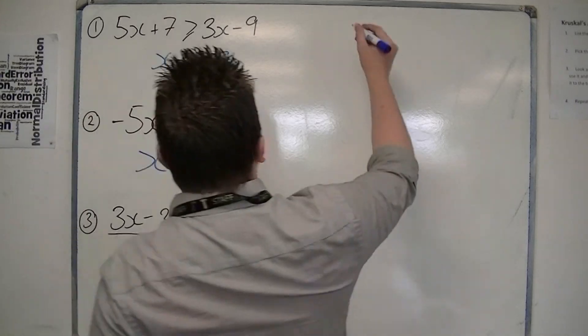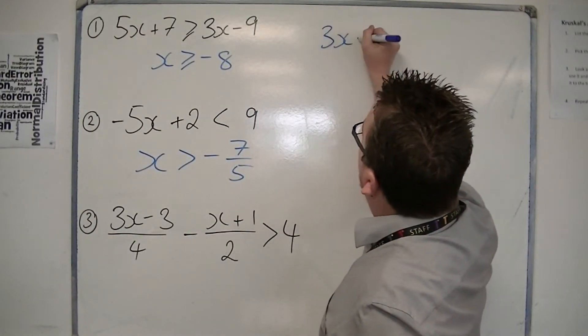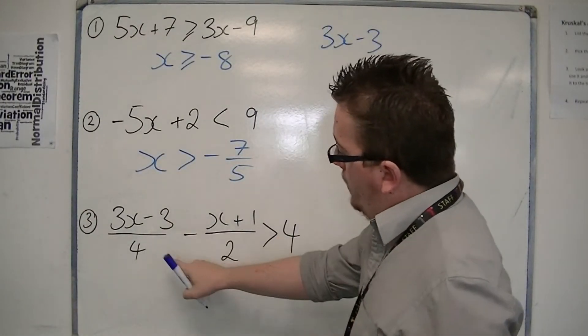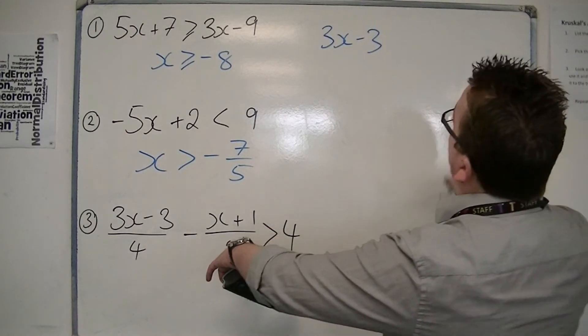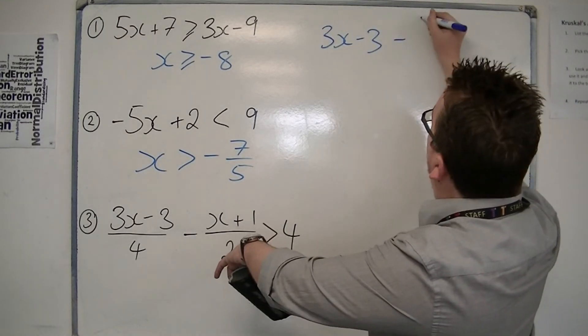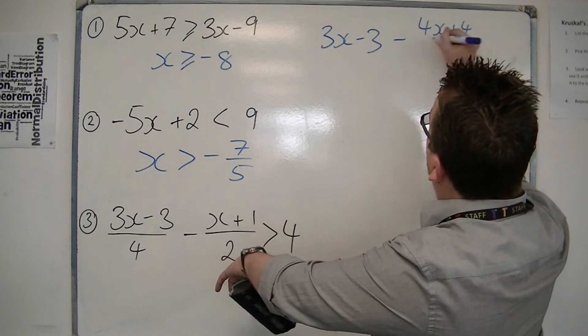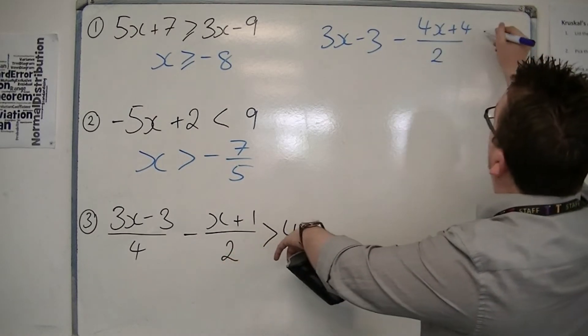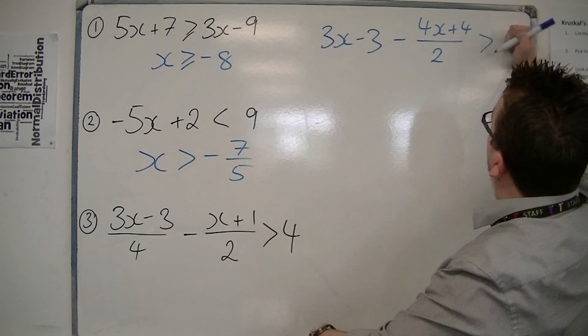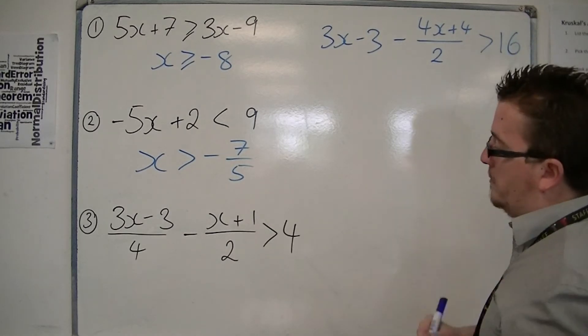That leaves 3x minus 3, minus 4x plus 4 over 2, greater than 16 because we've multiplied everything by 4.